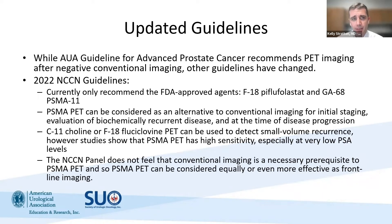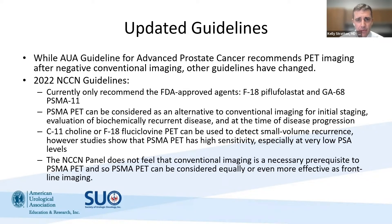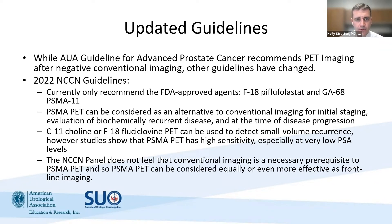Guidelines have been updated. While the AUA guidelines are still awaiting update, the NCCN guidelines currently state that FDA-approved agents such as F18 or gallium-68 PSMA PET are options that can be considered not only in patients with biochemical recurrence. The NCCN guidelines are opening this up for advanced imaging in initial staging, at the time of biochemical recurrence, and at the time of disease progression. The NCCN guidelines also mention choline PET and fluciclovine as imaging options for detecting small-volume recurrences. However, PSMA PET has high sensitivity even at very low PSA, so it's the preferred imaging option.